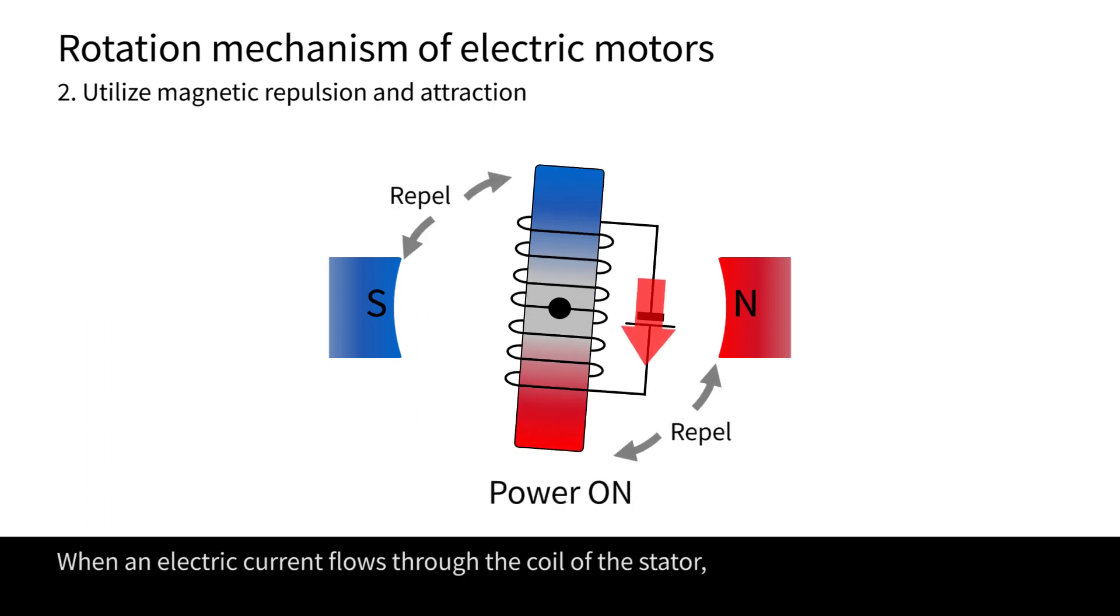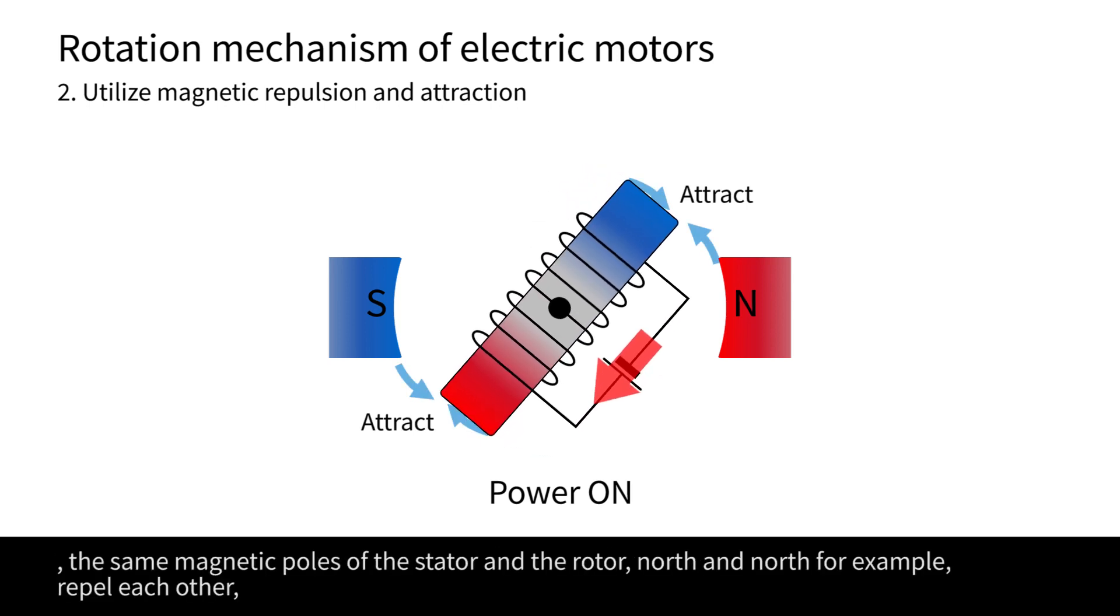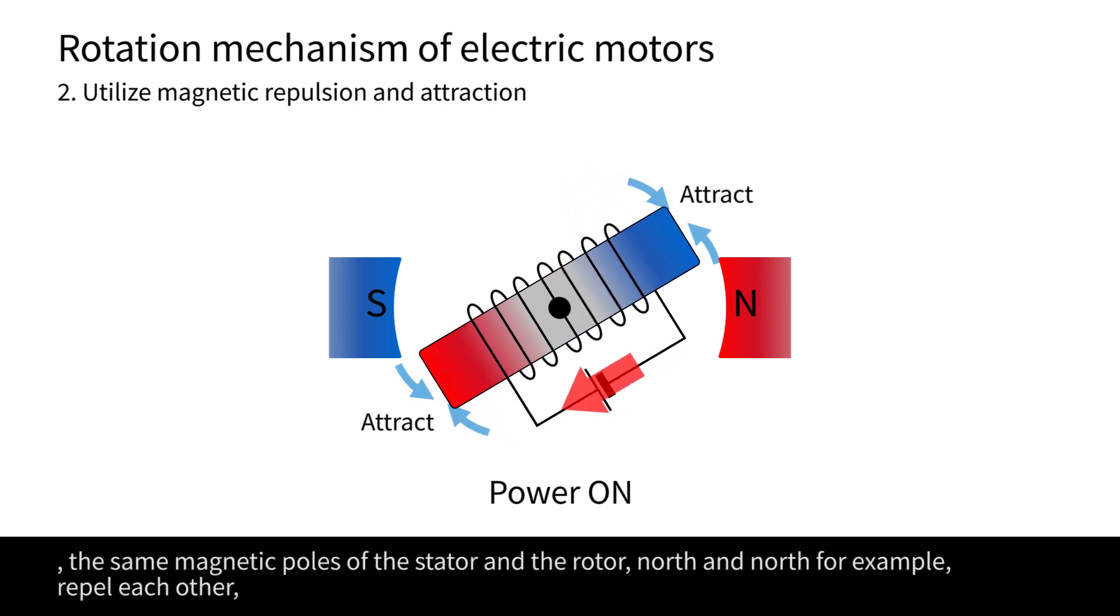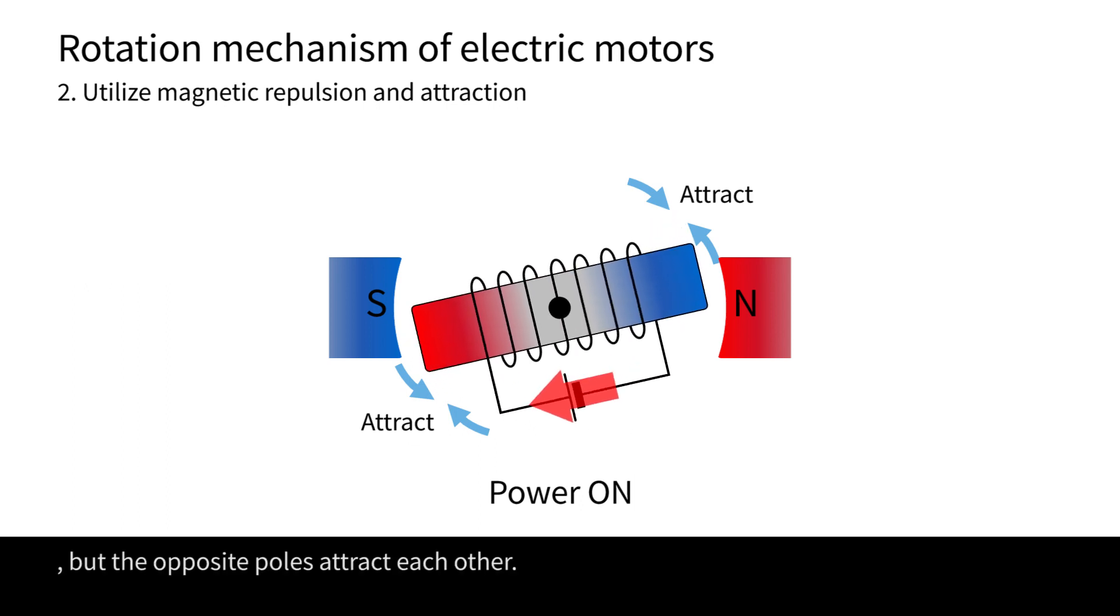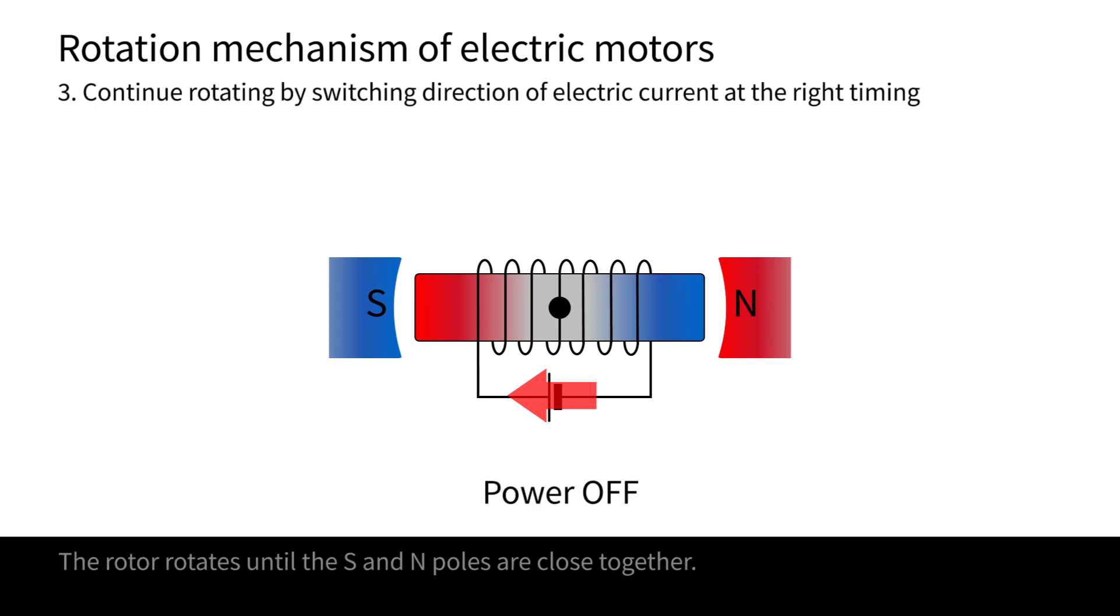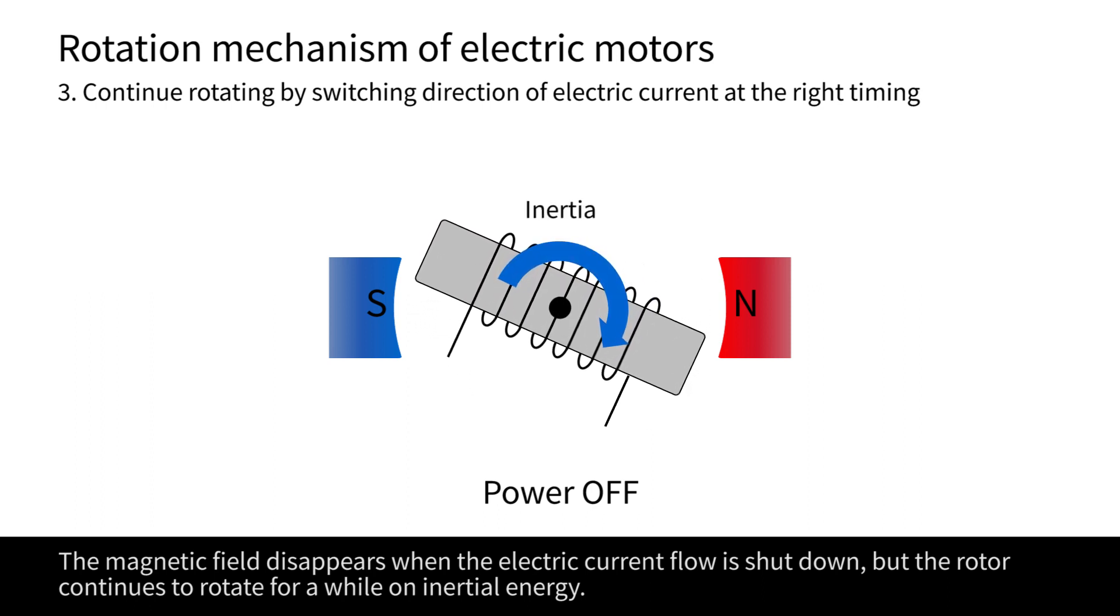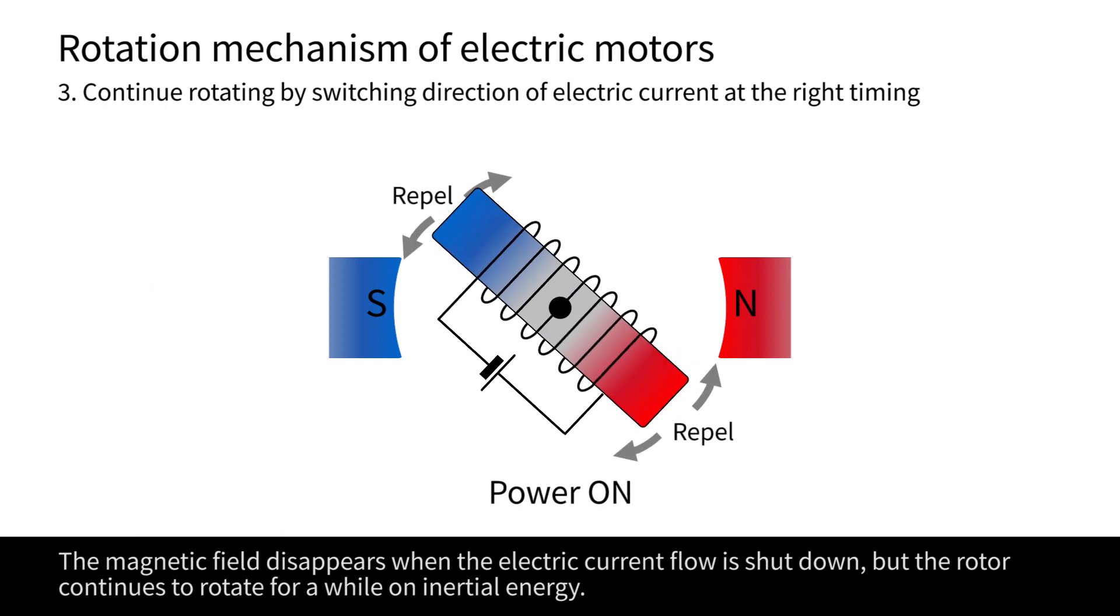When an electric current flows through the coil of the stator, the same magnetic poles of the stator and the rotor, north and north for example, repel each other, but the opposite poles attract each other. The rotor rotates until the S and N poles are close together. The magnetic field disappears when the electric current flow is shut down, but the rotor continues to rotate for a while on inertial energy.